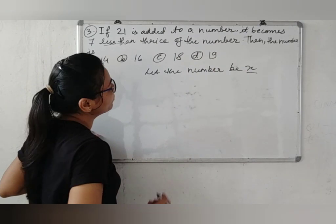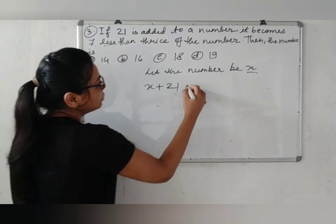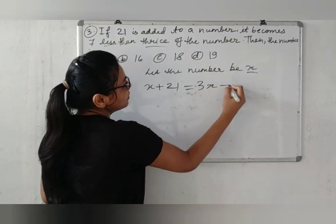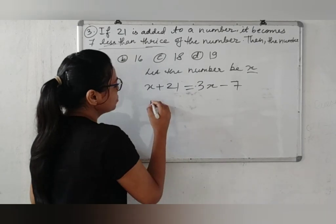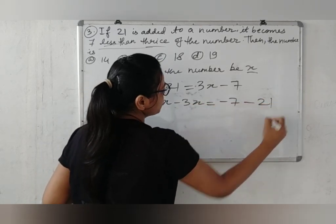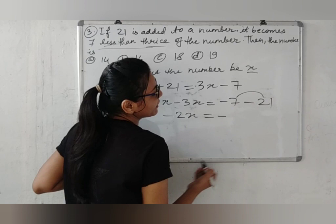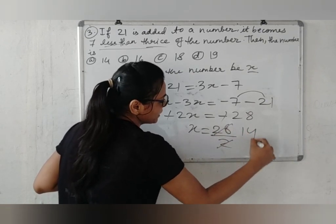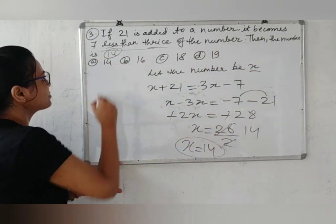So, 21 is added to the number: x plus 21. It becomes 7 less than thrice of the number: 3x minus 7. So x plus 21 equals 3x minus 7, which gives minus 2x equals minus 28, so x equals 14. The number is 14. The option shown is the right answer.